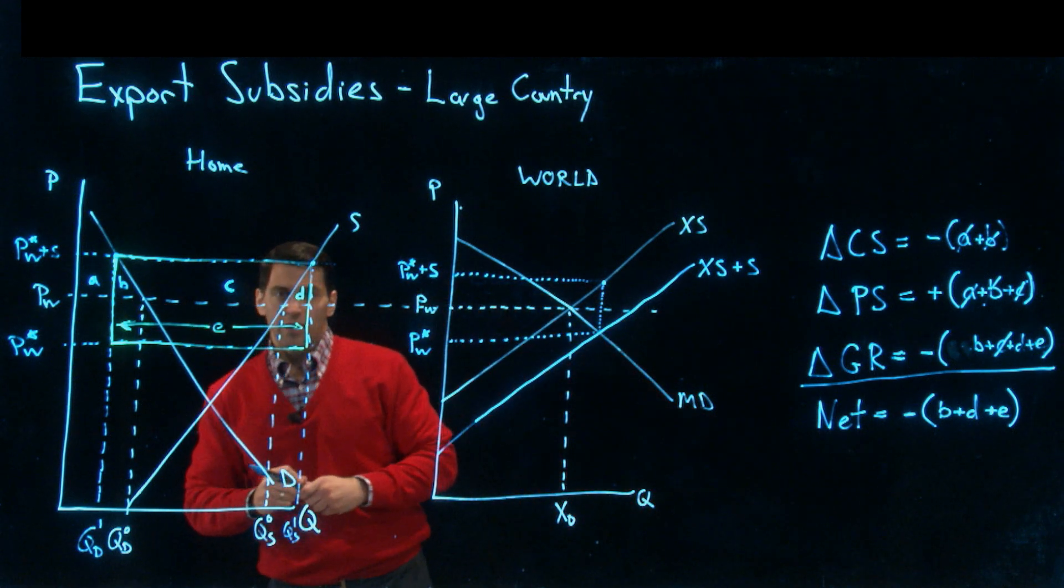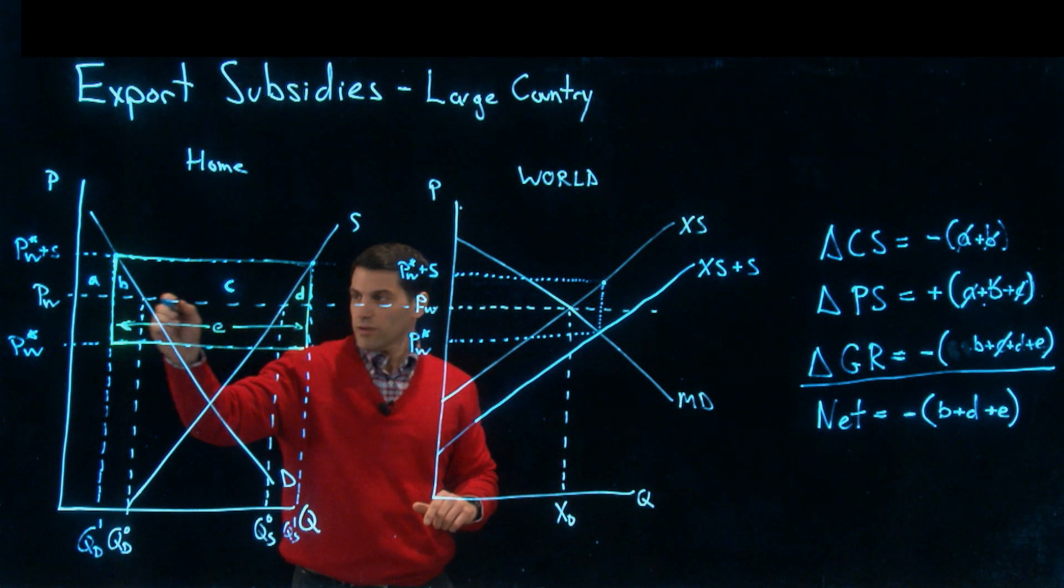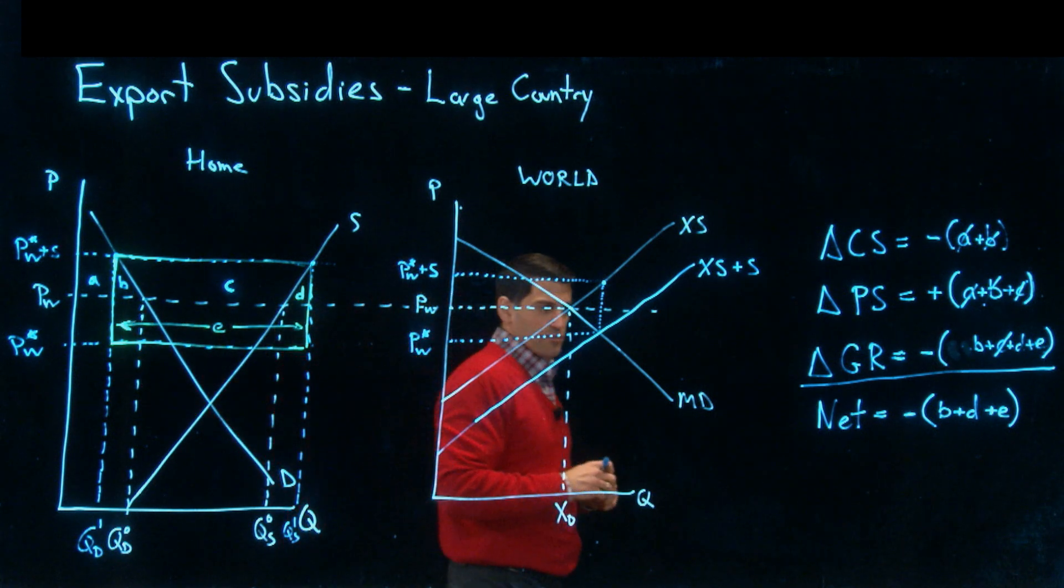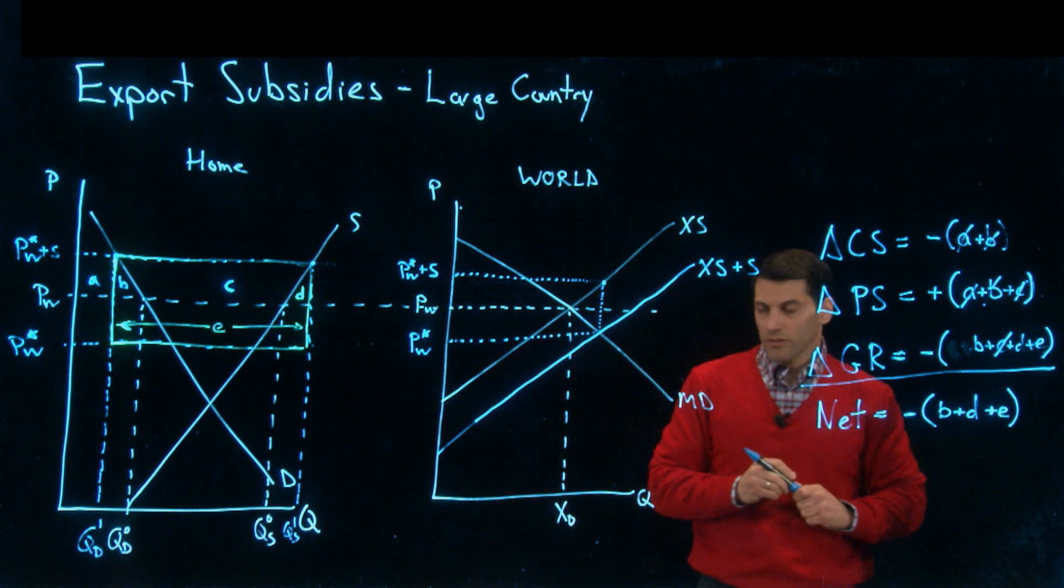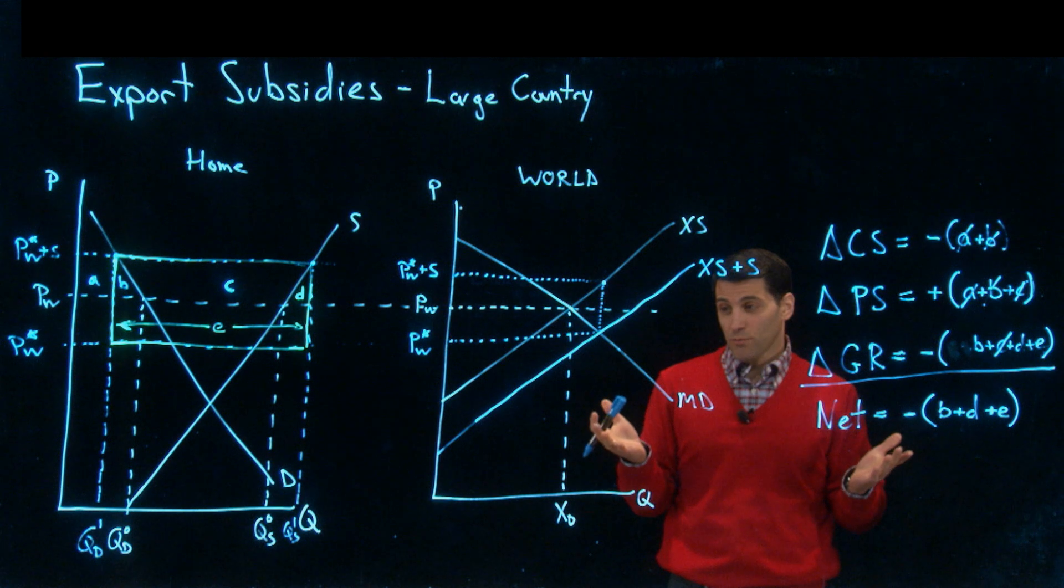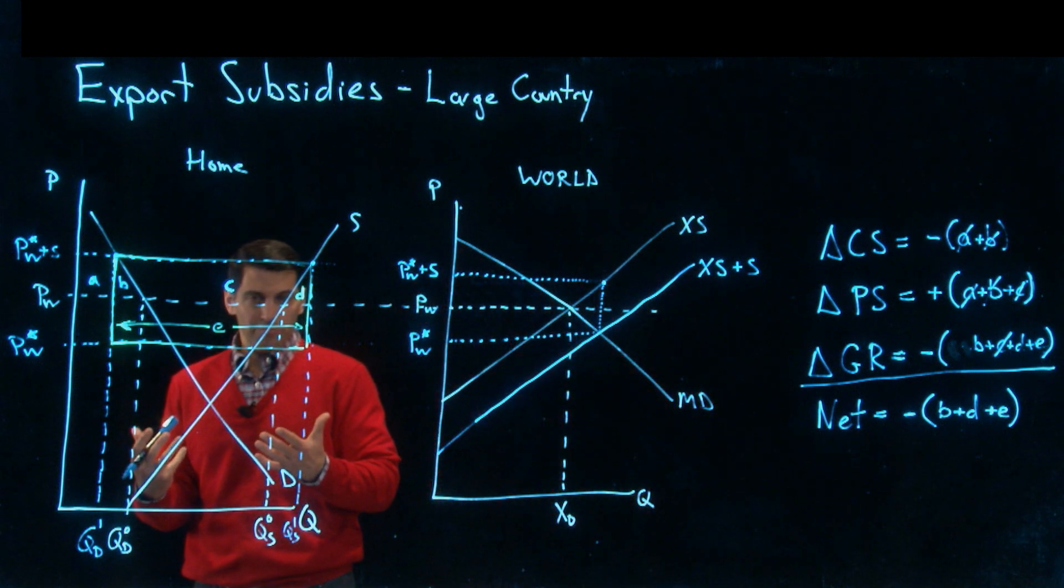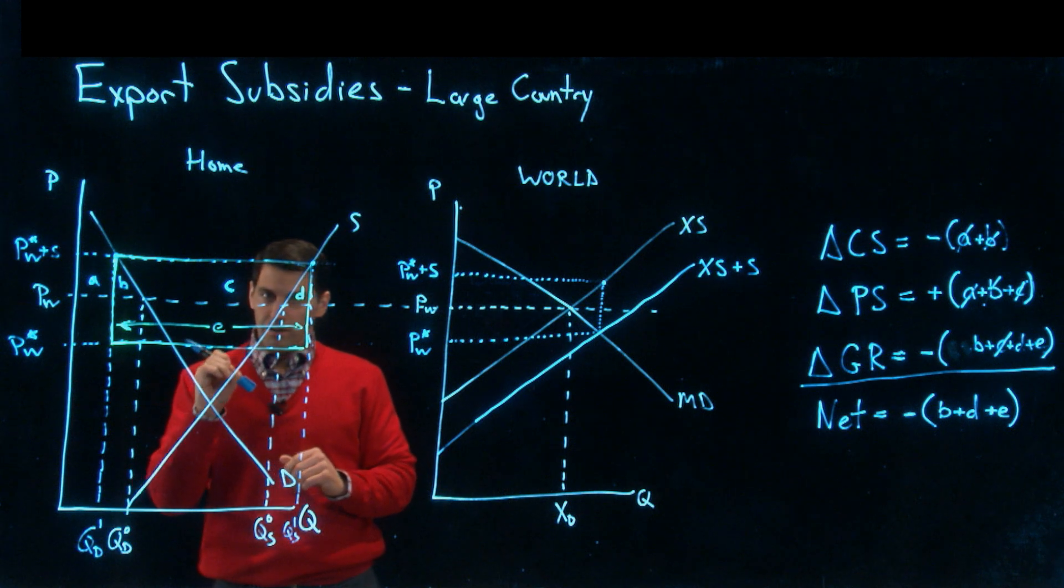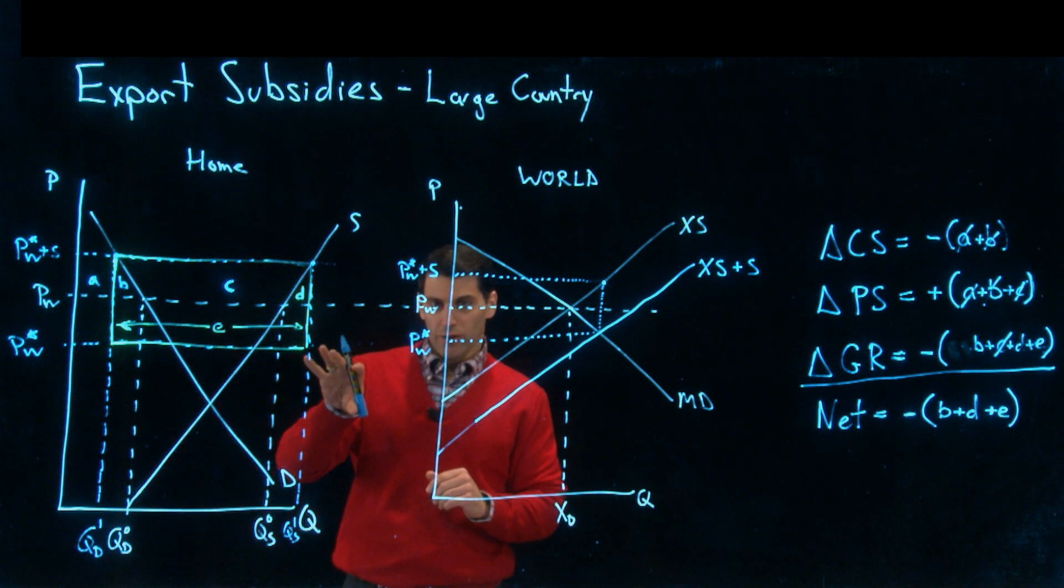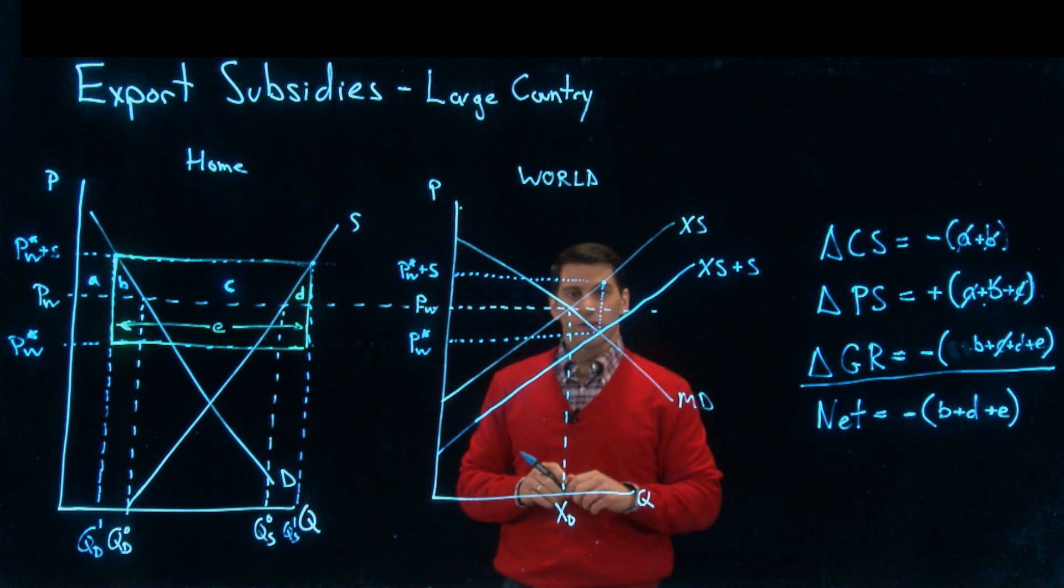What is E? E is this part of the government's cost of implementing the export subsidy that nobody's picking up domestically. Nobody's picking that up. The question is, what happens to this E? It must be going somewhere, and it is, but it's not accruing to anyone here in the home country. Let's take a look here in our world market.